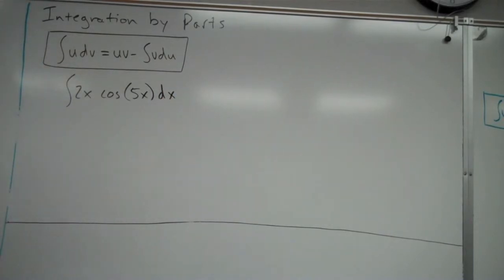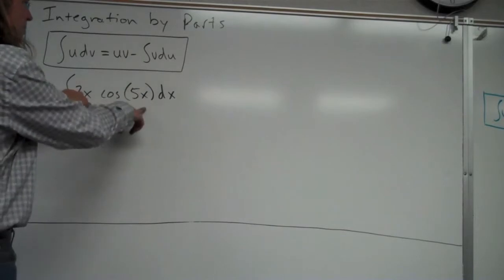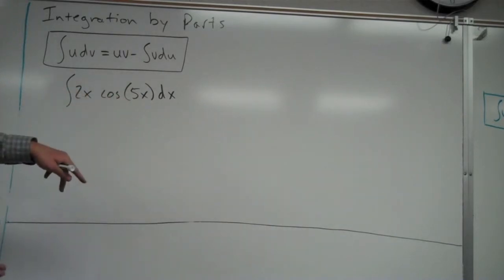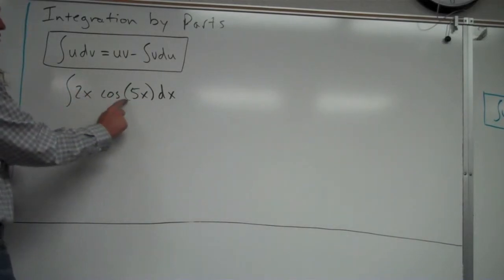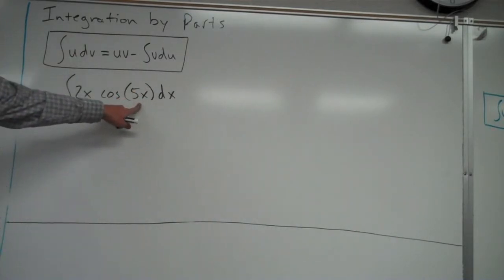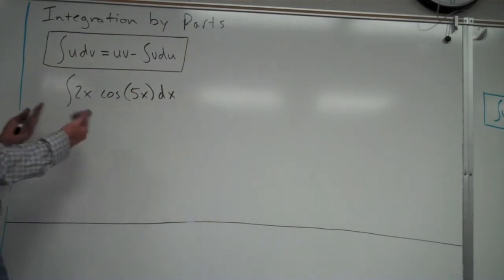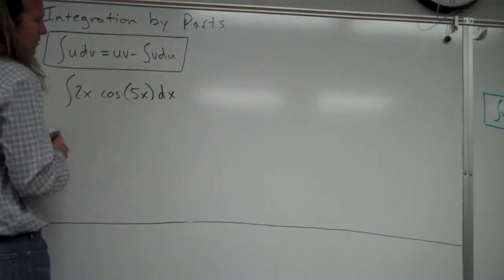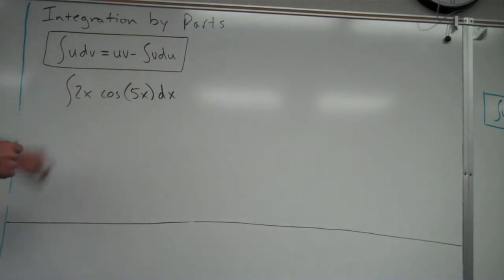So integration by parts is one of those things you have to figure out, when is this useful? When should I use this? Basically when two functions are multiplied by each other and you can't use u sub. Like if this was 2x cosine of 5x squared, you'd use u sub to let u equal 5x squared. But it doesn't work like that because if you let u equal 5x, the derivative would be 5. You wouldn't be canceling this x outside. So you'll just kind of get familiar with this type of problem here.